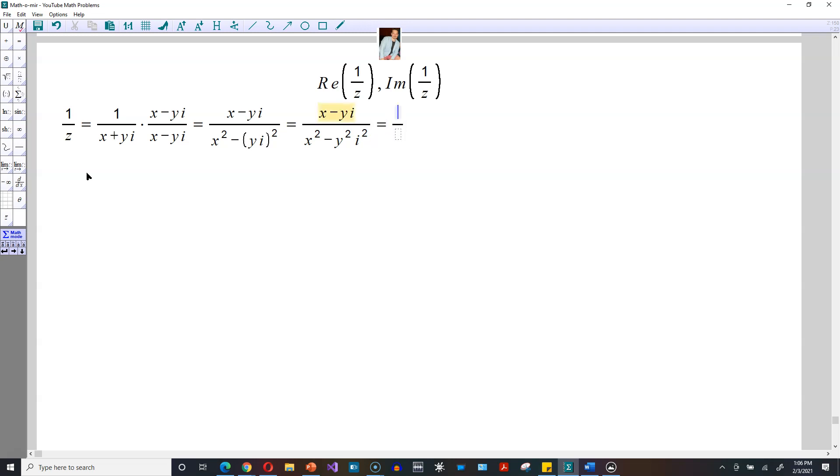Continuing here, you're going to have at the top now x minus yi. At the bottom, you'll have x squared and then minus y squared. And then i squared can be replaced with negative 1.